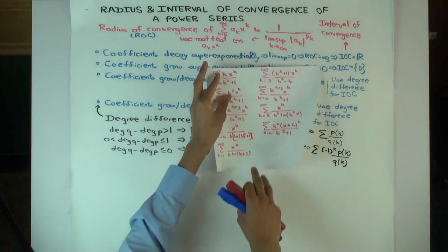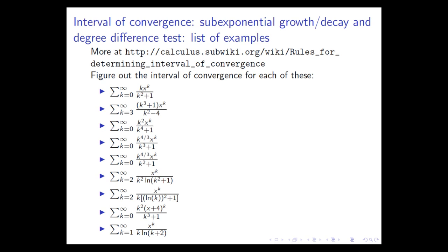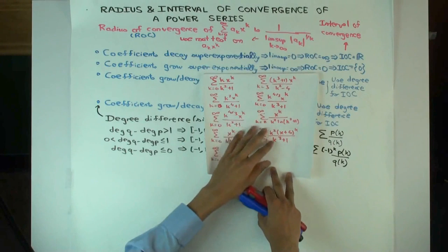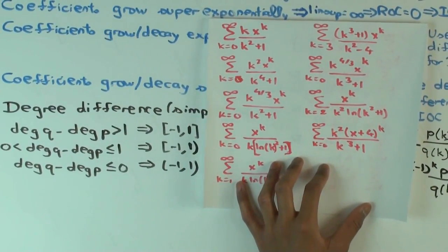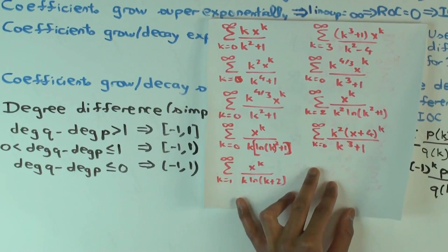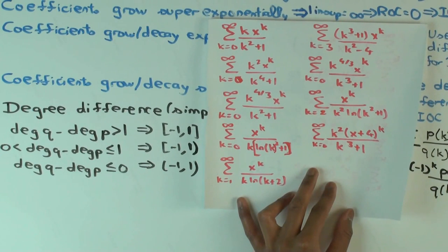Now let's do a few examples. First, are all of these examples situations where the coefficients are sub-exponential? Yes. So what can we say about the radius of convergence in all these examples? One. The radius of convergence is one in all cases — we determined nine of them in one go.